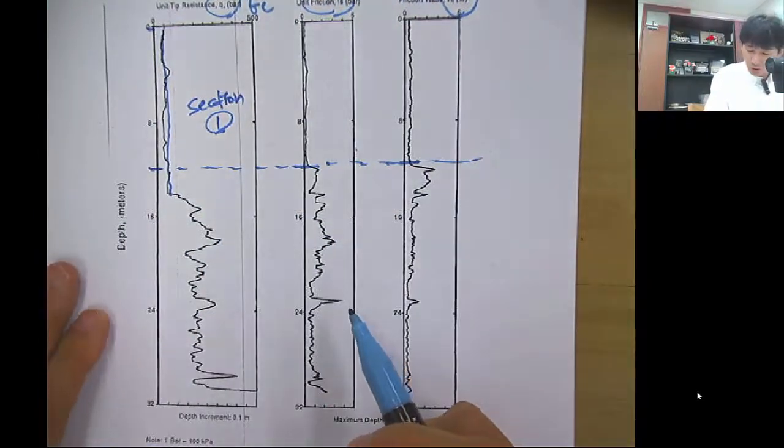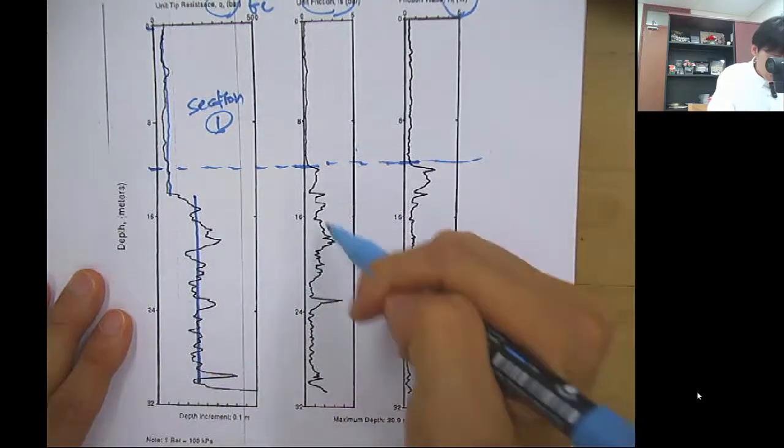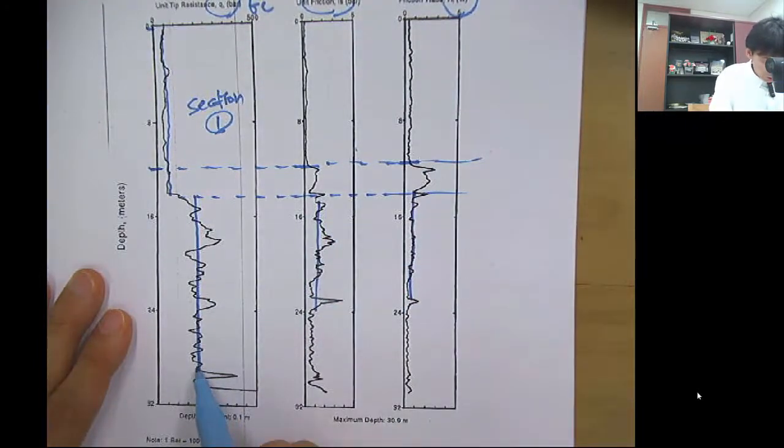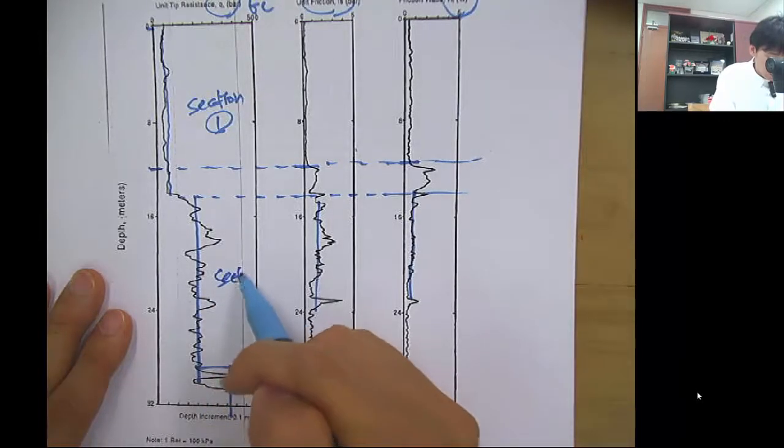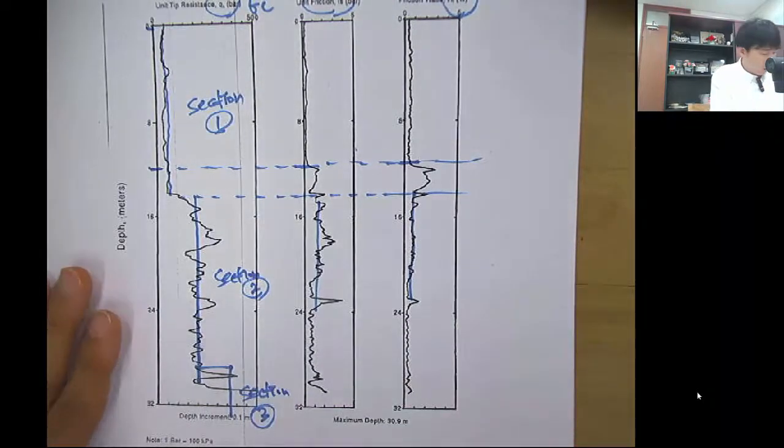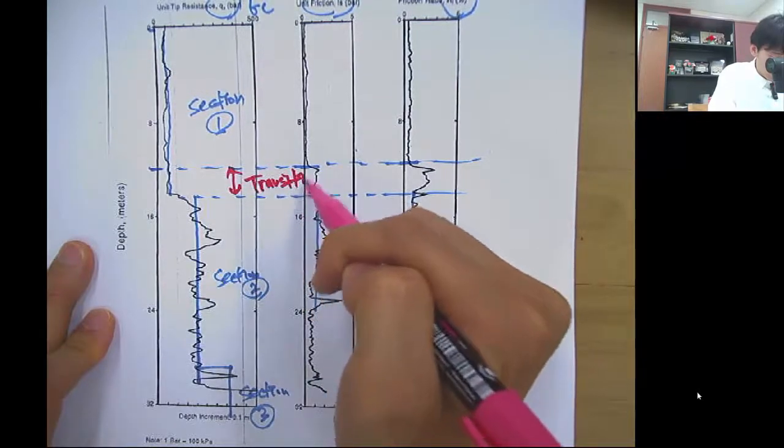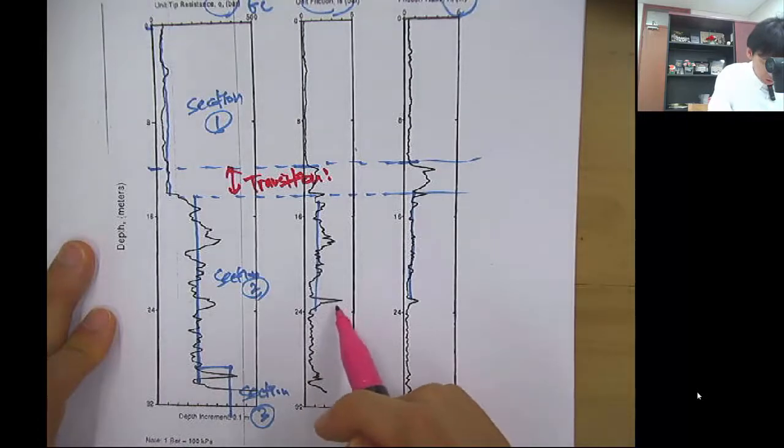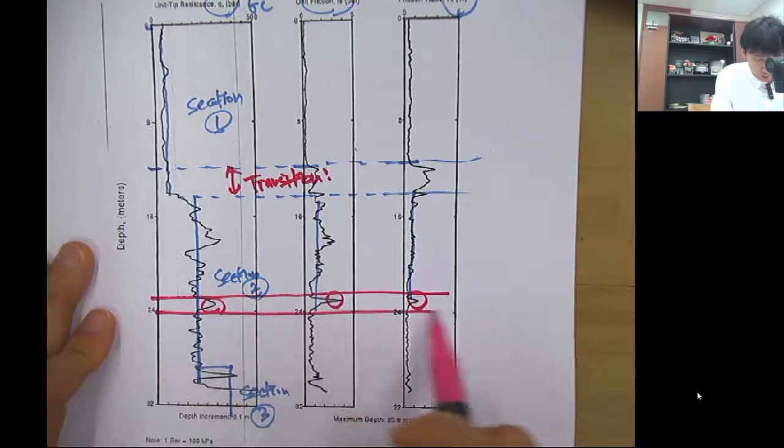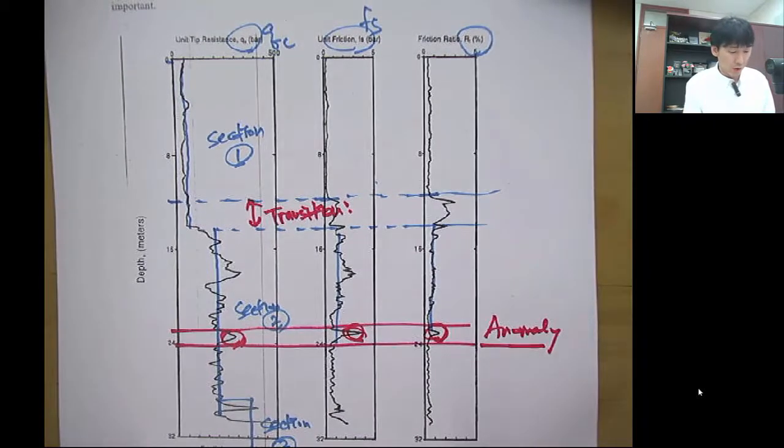Maybe layer one or section one. According to the QC, here you have another layer. You can see that it is pretty consistent, and then here you have another layer. Section 2 and section 3. But interesting thing is that this might be some kind of a transition. You have a spike here, and here, probably there could be some anomaly. This spike may indicate an anomaly in the layers with high resistance.